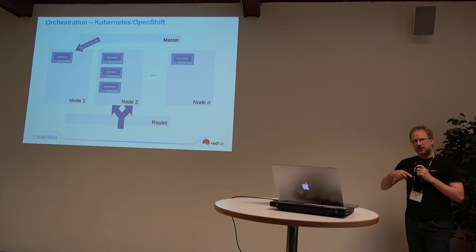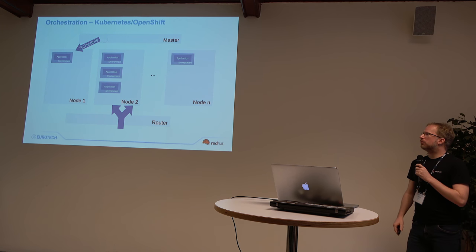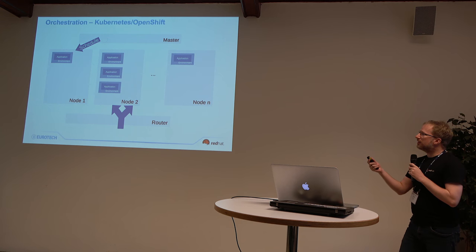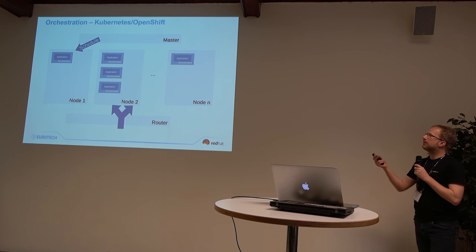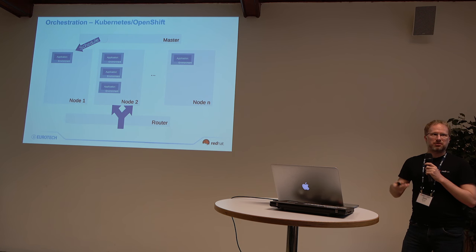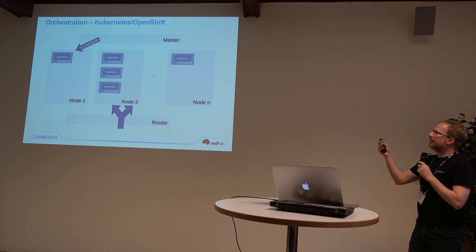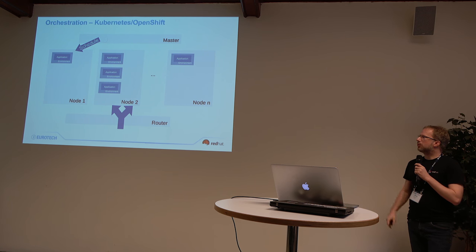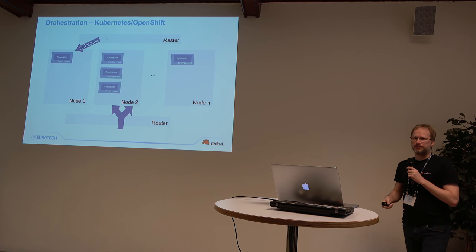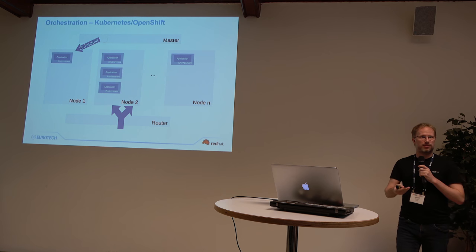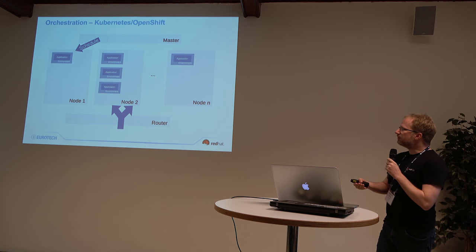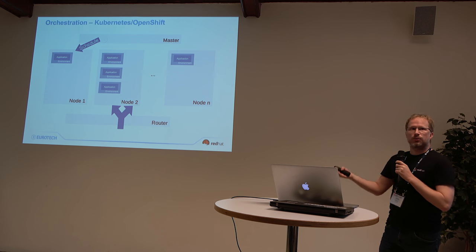If you want to think about scaling up, you need a way to orchestrate that. Running one Docker on a local machine is fine, but if you want to scale out on different data centers or different machines, you need more power — something like Kubernetes or OpenShift, which is based on Kubernetes, to orchestrate that. You have a master machine or some master instance controlling that, different worker nodes, and workloads get scheduled on those nodes. For example, a web UI gets scheduled on one node; if you have higher demand, you can scale up to different nodes. There's also a router that allows access from the external side and directs requests to the actual worker node hosting your service.